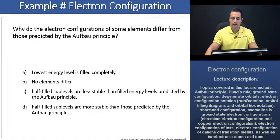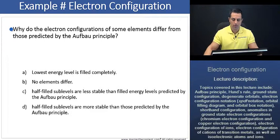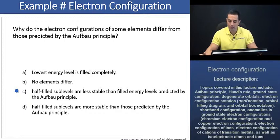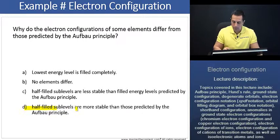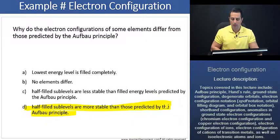Example question: Why do the electron configurations of some elements differ from those predicted by the Aufbau principle? A. Lowest energy level is filled completely. B. No elements differ. C. Half-filled sublevels are less stable than filled energy levels predicted by the Aufbau principle. Or D. Half-filled sublevels are more stable than those predicted by the Aufbau principle. This answer is pretty straightforward — it's D.